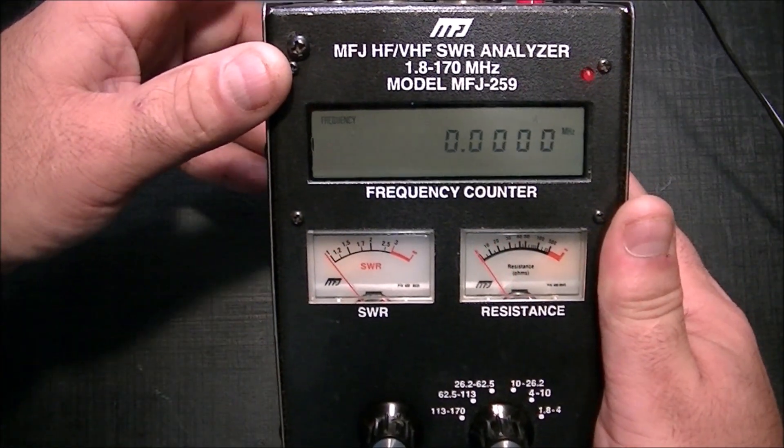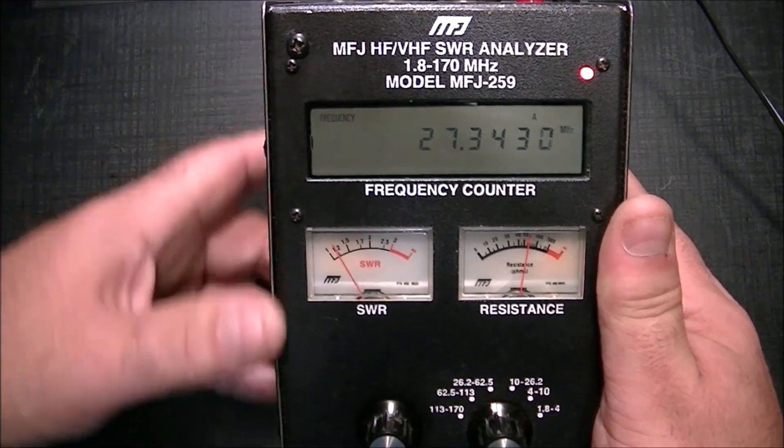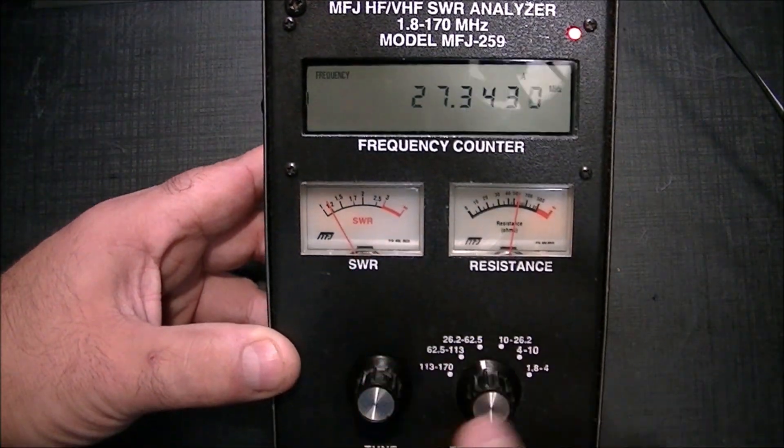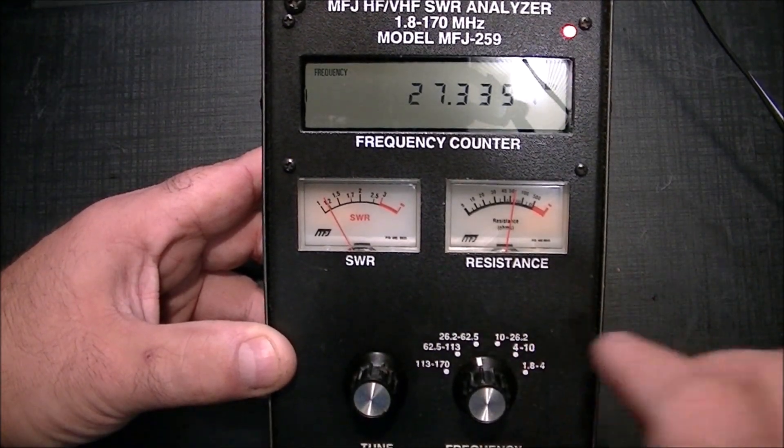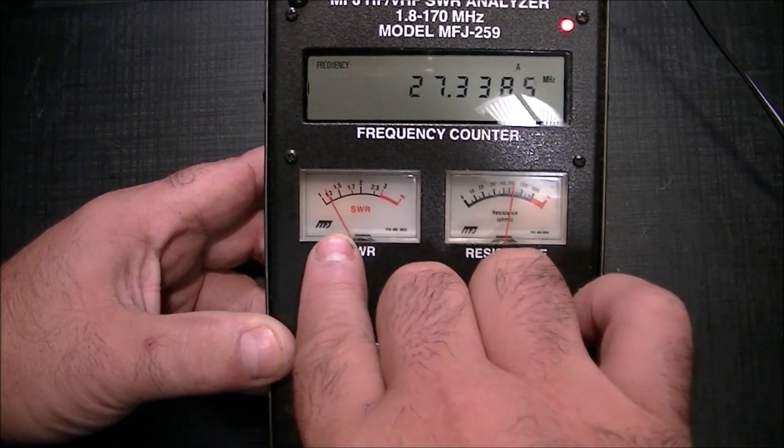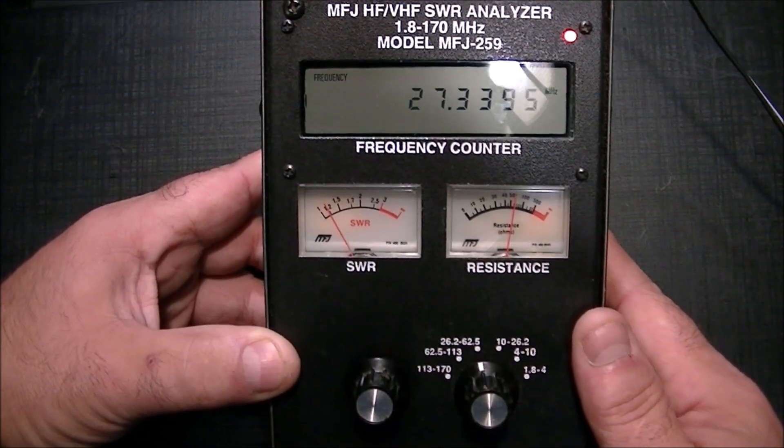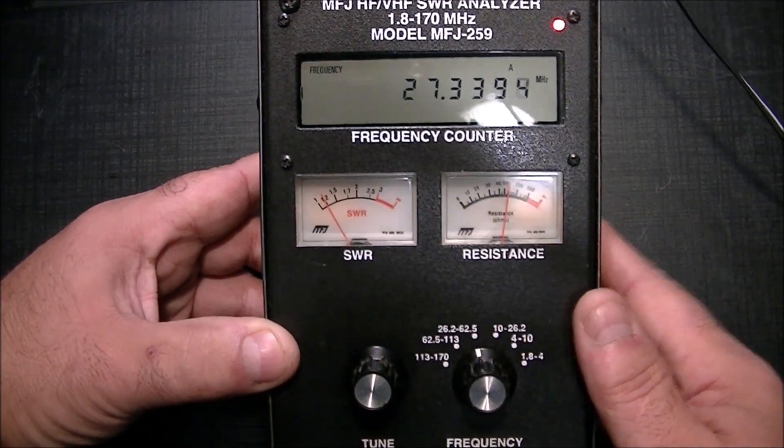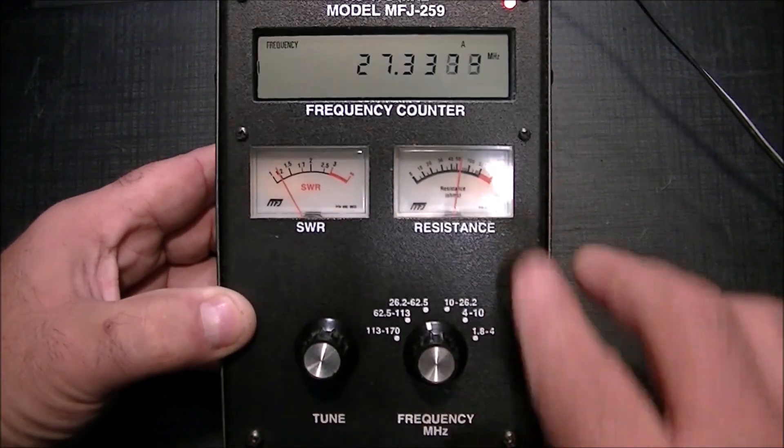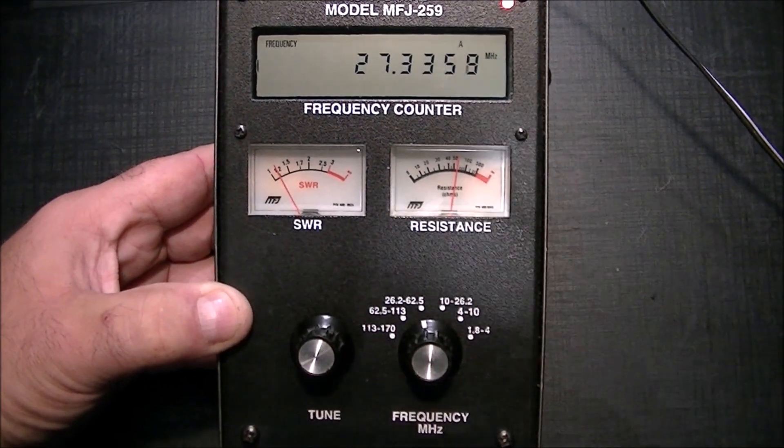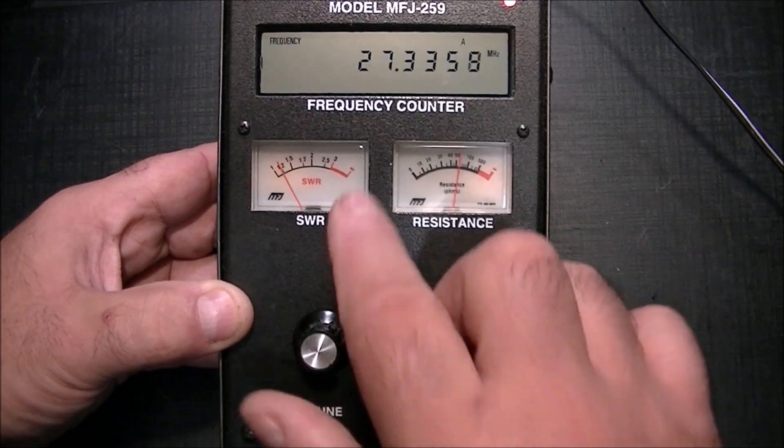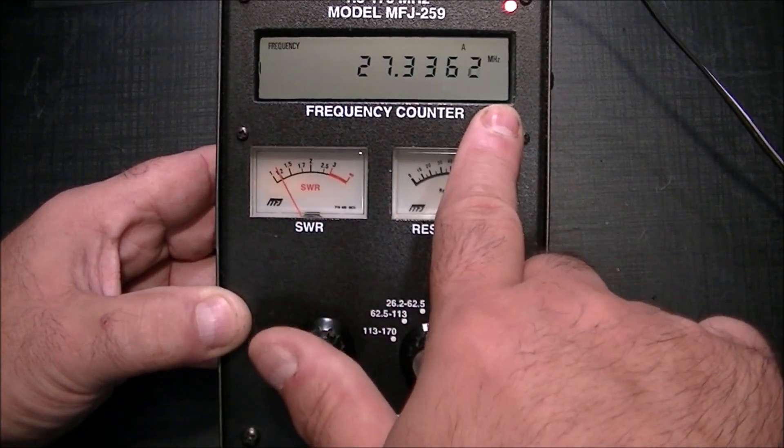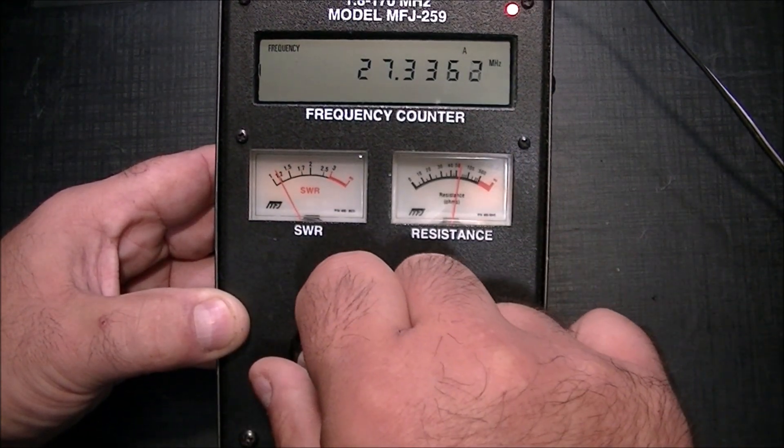It's telling me that at this frequency here on demand, which is about channel 34 or 35, my SWR is 1.2 I believe and the resistance here is a little bit above 50.